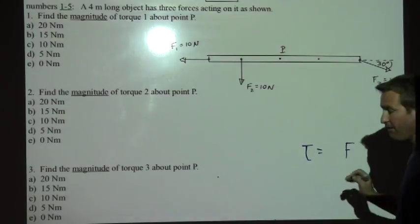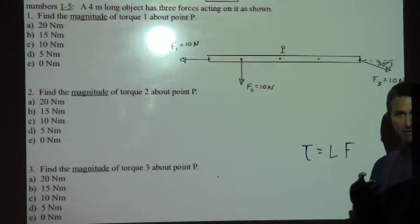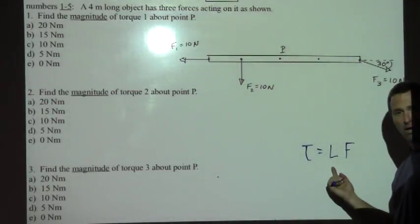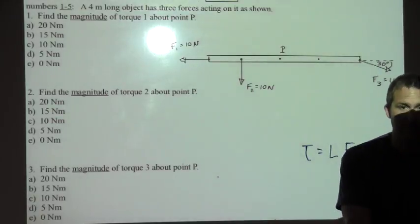We're going to individually take each force and multiply each of their individual lever arms. So torque one will be lever arm one times force one, etc. How are we going to get the lever arms?